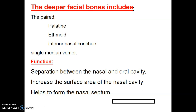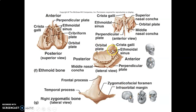The deeper facial bones help to separate the nasal and oral cavities. For example, the palatine bones separate the nasal cavity from the oral cavity. The conchae increase the surface area in the nasal cavity, and the vomer together with the perpendicular plate of ethmoid form the bony nasal septum. The ethmoid bone has the crista galli, a perpendicular plate, houses the ethmoid sinus, and also forms part of the middle nasal concha.